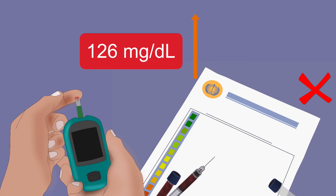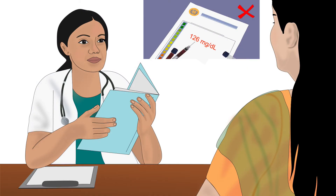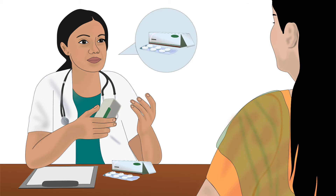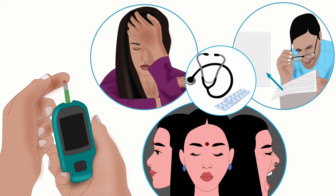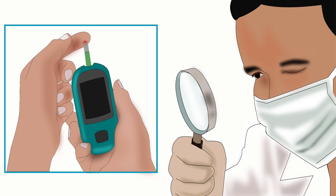Suppose your blood report shows high blood glucose levels and you consult a doctor. You describe your problem as high blood glucose levels. The doctor will give you a medicine to lower your blood glucose levels. This medicine treats the symptom and not the cause.